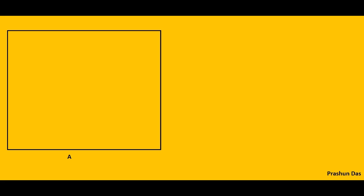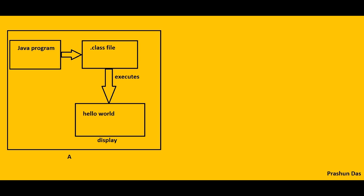Now suppose we have a machine named as A. A developer writes a Java program for displaying hello world and executes it in machine A. Now what is it in machine A that helps a developer write or develop a code and then successfully execute and display it? It is the JDK, i.e. Java Development Kit.